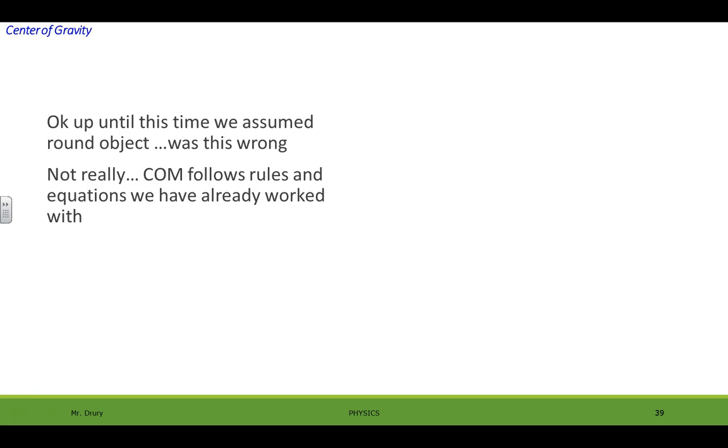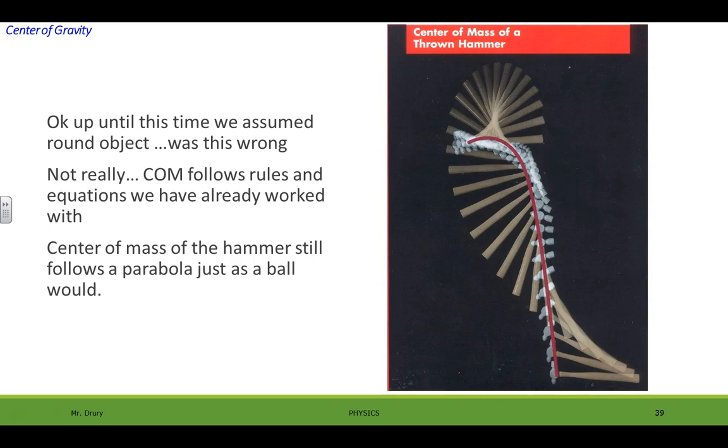Up until this time we have assumed round objects and was this wrong? Not really. The center of mass follows rules and equations we have already worked with. For example, let's consider a hammer being thrown. Even though it's making this funky shape as it rotates, the center of mass still follows a parabola. So all the problems we've done so far we've really been only thinking of the center of mass and ignore the fact that it could have been rotating.